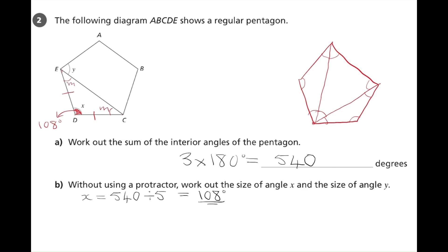So looking inside the isosceles triangle, 2 multiplied by m plus the 108 must equal 180 degrees inside that triangle. So if we subtract 108 from 180, we'll get 2m is 72. So angle m must be 36 degrees.